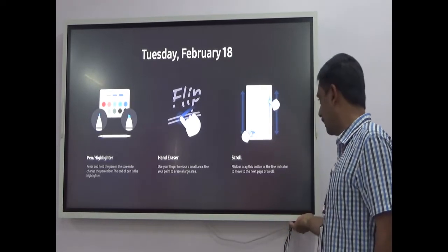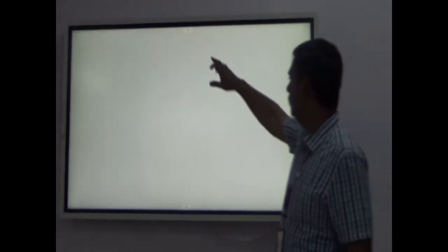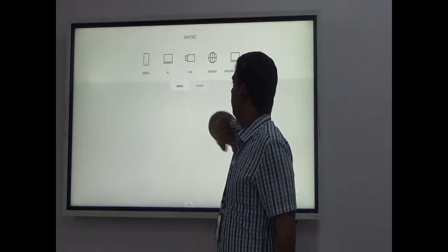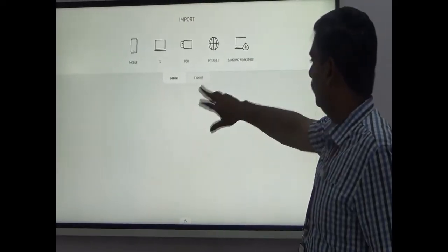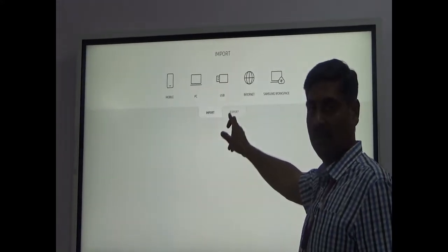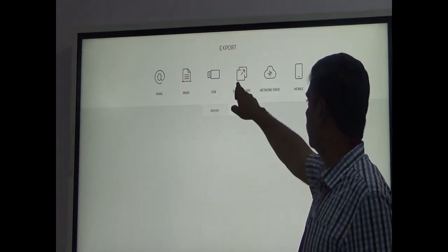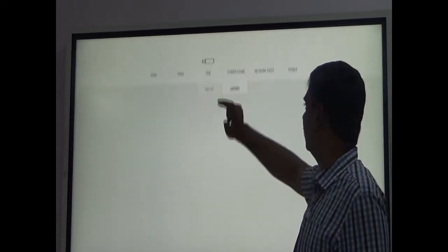Just switch on the digital board, you will get this blank screen. Go to the top menu. You can see these two options: one is import, the other one is export. Here you need to click the export option, where you can see the screen share option. Just click on screen share.